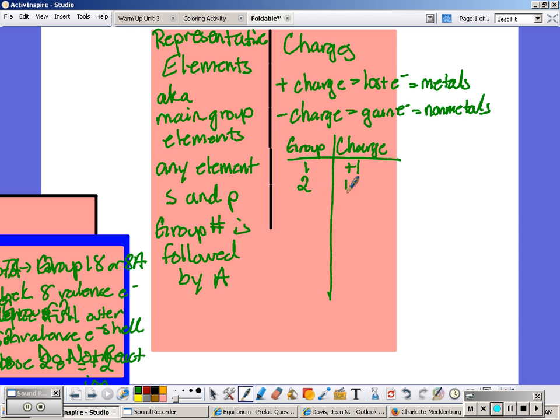All elements in groups 3 through 12 can have a variety of charges. Their charges vary. We would have to be told. Group 13 has a plus 3 charge.